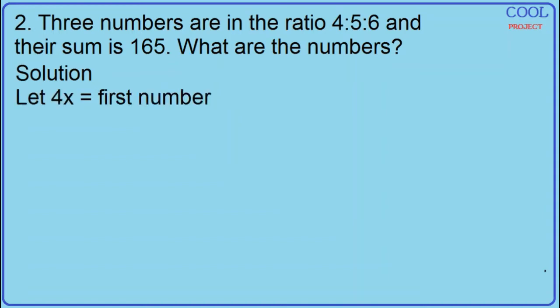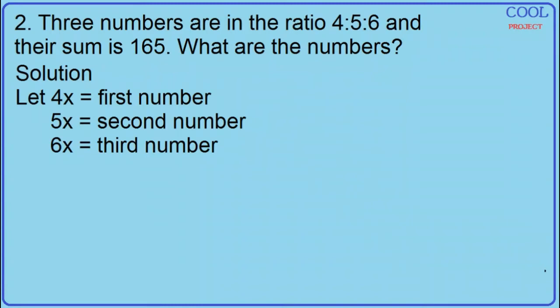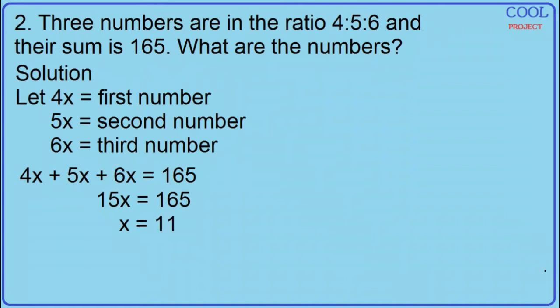Let 4x equal the first number, 5x equal the second number, and 6x equal the third number. The equation is 4x plus 5x plus 6x is equal to 165. Combine similar terms: 15x is equal to 165. Divide both sides by 15. x equals 11.